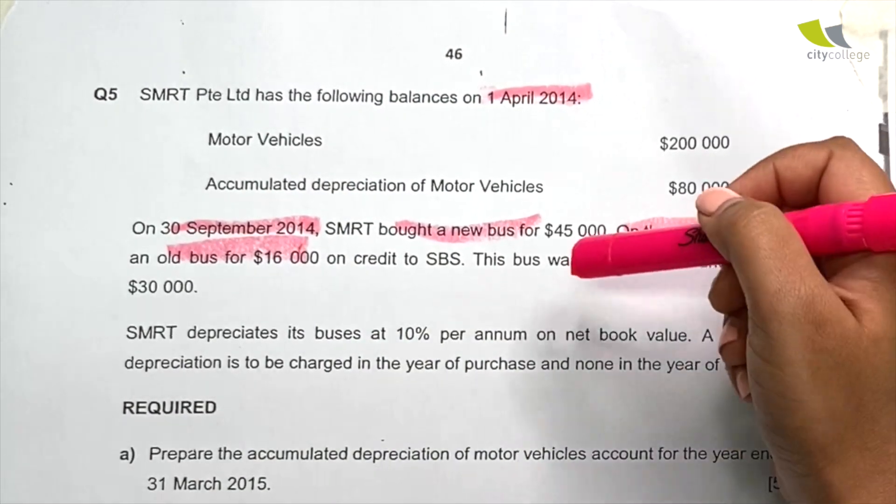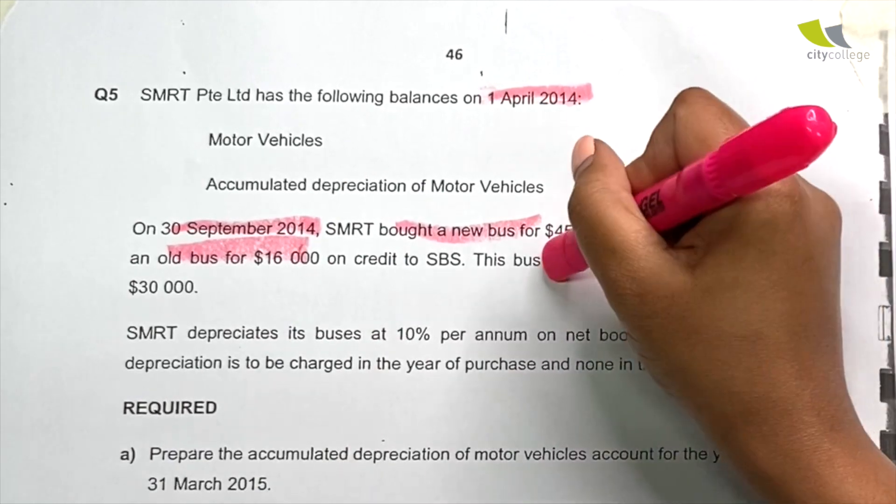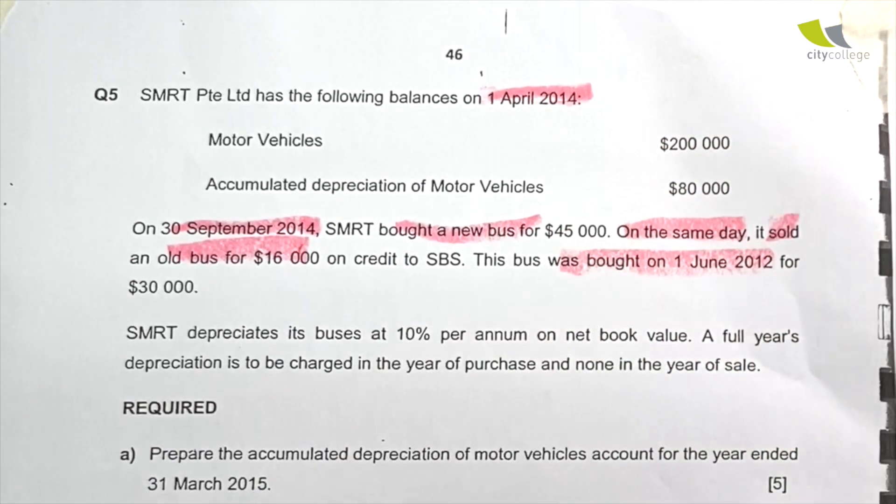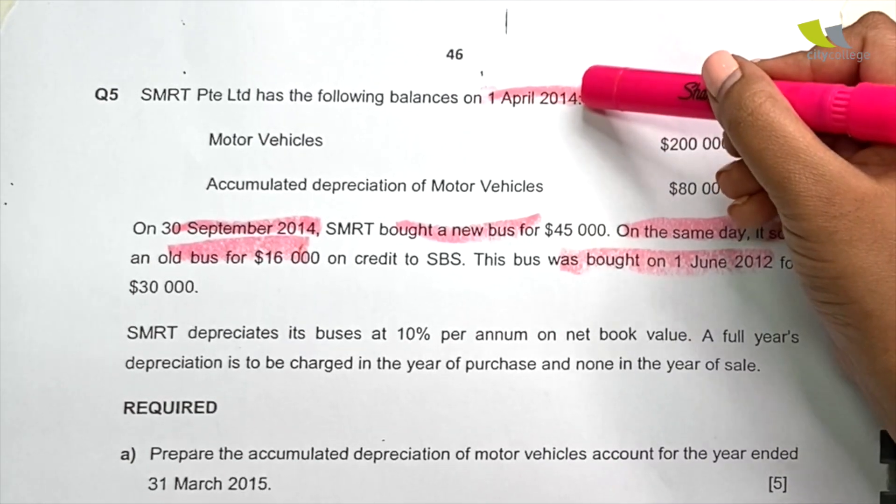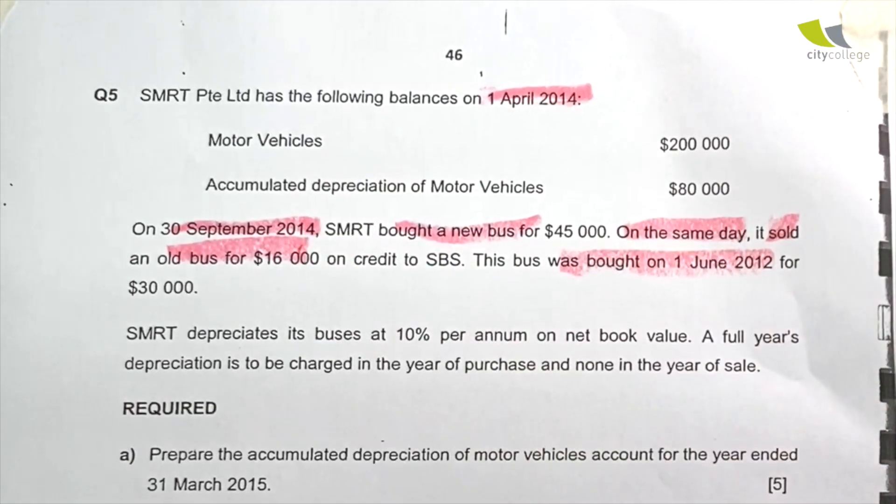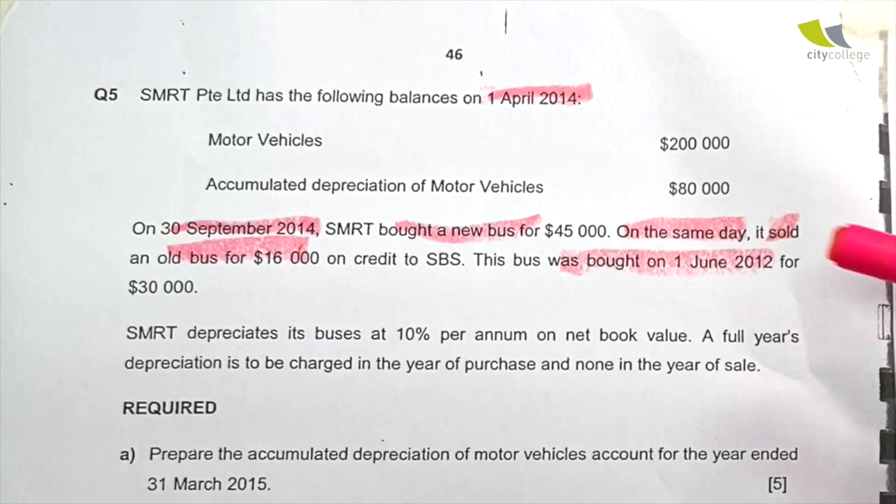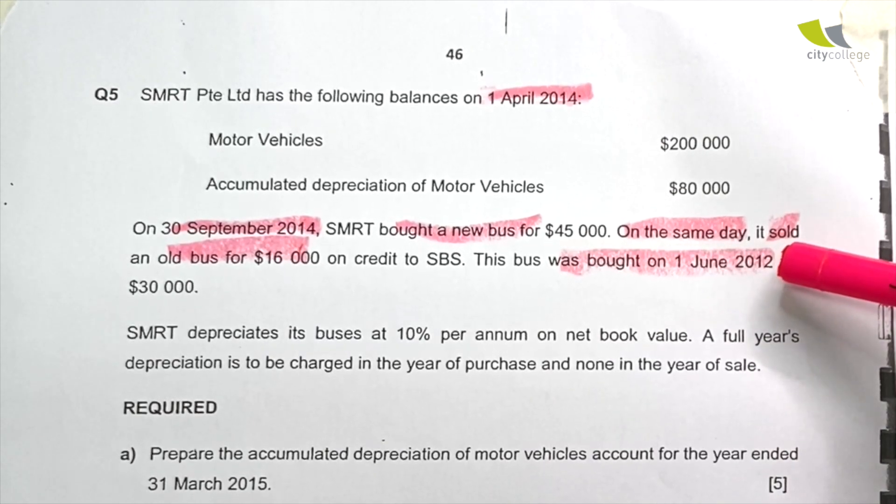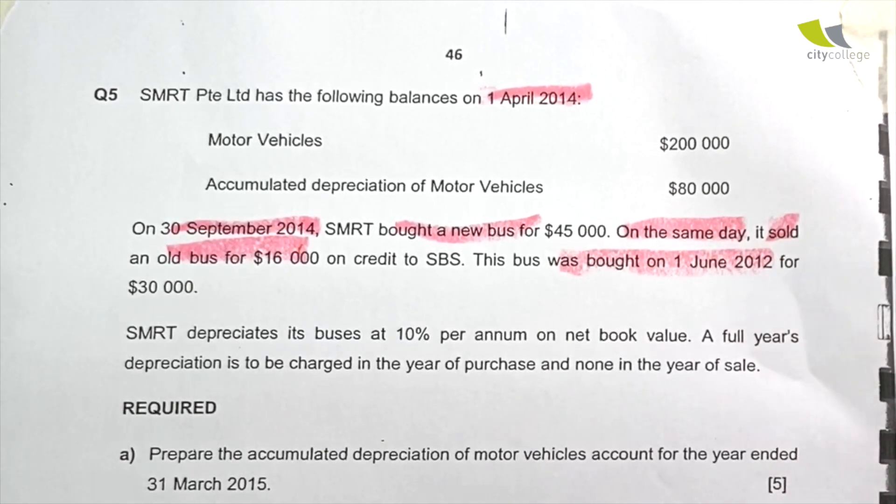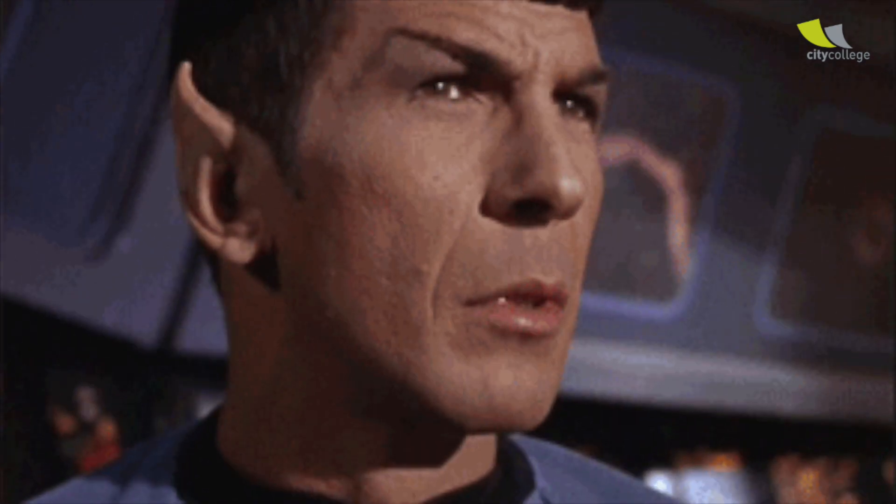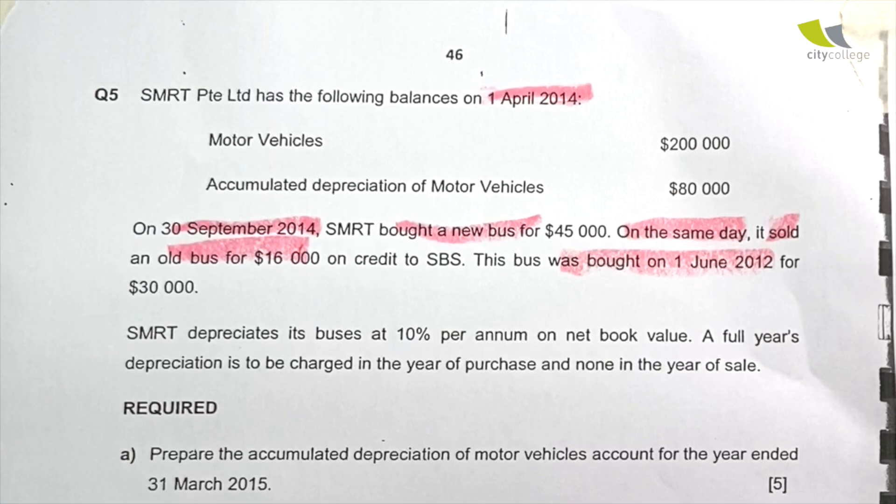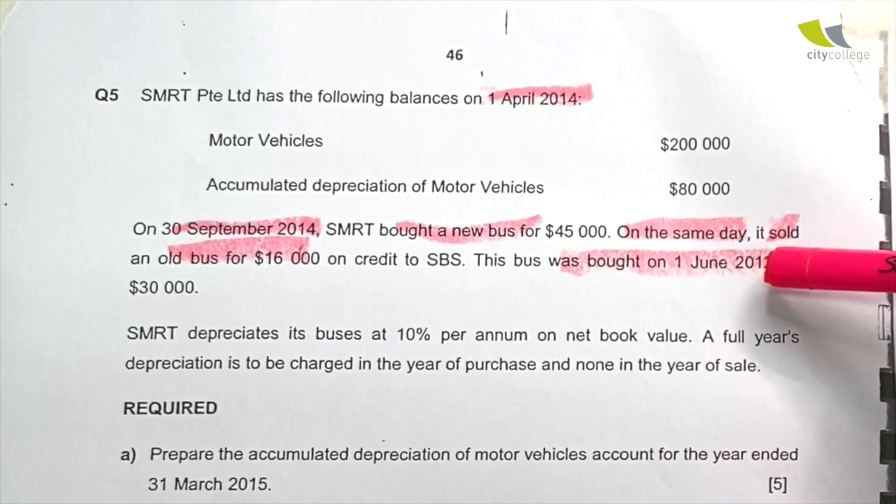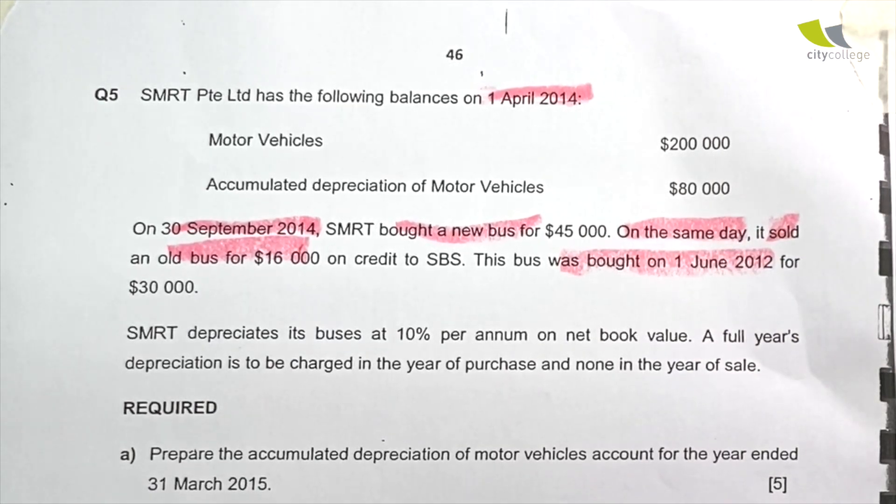This bus, the bus that they actually sold, was bought on 1st June 2012. If you notice something, we have been mentioning the year 2014 all along, all of a sudden now, we are talking about the year 2012, which is actually 2 years before that. So pay attention to dates. This old bus was actually bought 2 years before the year 2014.